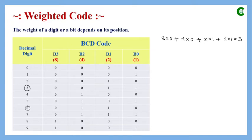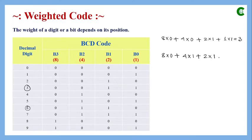To represent decimal 6 in BCD using the 8-4-2-1 weight format, the combination is 0110. This gives 8×0 + 4×1 + 2×1 + 1×0 = 4 + 2 = 6. This is the unique combination for decimal 6 in the 8-4-2-1 weighted code.